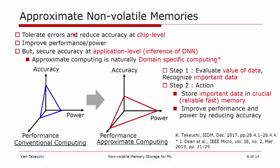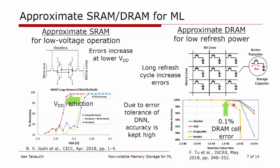Already there are some approximate memories in volatile memories. In the case of SRAM, if there is variability of the threshold voltage of transistors, we cannot decrease the VDD — the power supply voltage. But in the case of deep neural networks, we can tolerate errors, meaning we can decrease VDD and gain power reduction. In the case of DRAM, we need to increase refresh power for cells with leakage and set a very short refresh retention time. But in deep neural networks, we can accept some errors, so we can set a longer refresh time and reduce the power consumption related to refresh.